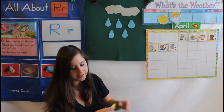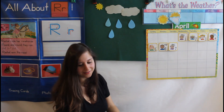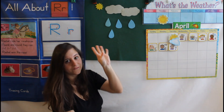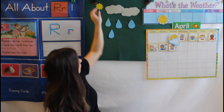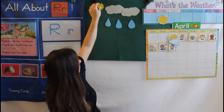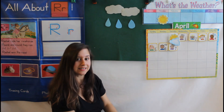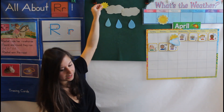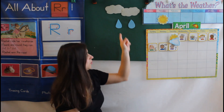Out comes the yellow sun, shining in the sky. And away goes one raindrop — bye bye. How many are left? Let's find out. One, two, three, four. Four little raindrops dancing on the walk. Pitter patter, pitter patter, that's the way they talk. Out comes the yellow sun, shining in the sky. And away goes one raindrop — bye bye. How many are left? One, two, three. Three little raindrops dancing on the walk. Pitter patter, pitter patter, that's the way they talk. Out comes the yellow sun, shining in the sky. Away goes one raindrop — bye bye. How many are left? What do you see? One, two.